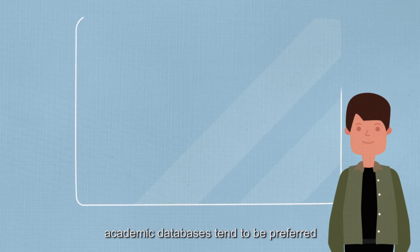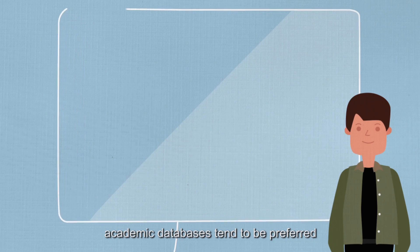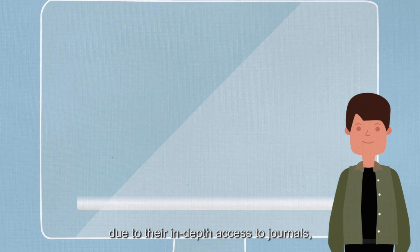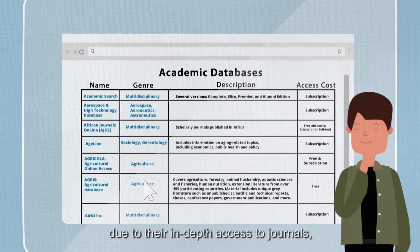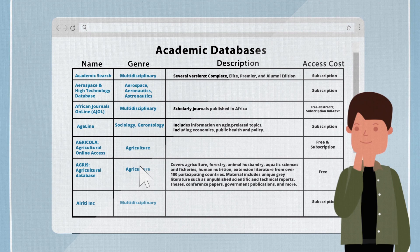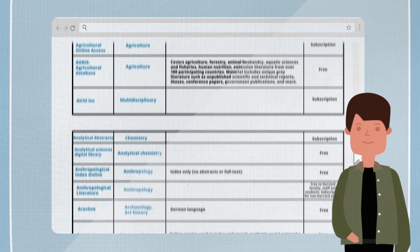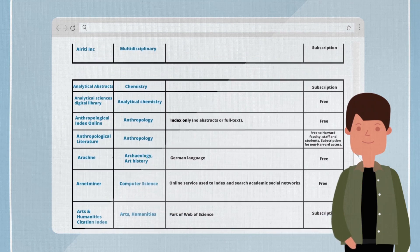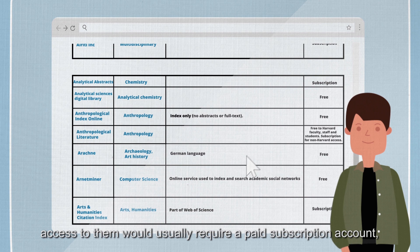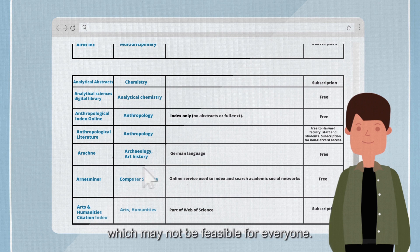When it comes to quality research sources, academic databases tend to be preferred due to their in-depth access to journals, repositories, archives and other articles. However, access to them would usually require a paid subscription account, which may not be feasible for everyone.